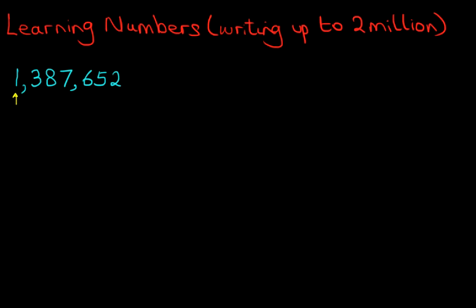We start on the left hand side. We have 1 million. Now you've learned how to write million. So we've got 1 million. Let's put a comma here.